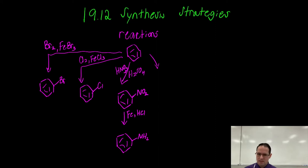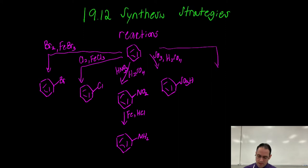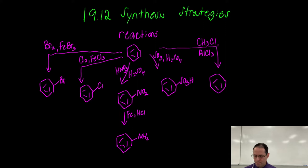Another reaction we can do is sulfonation. We do that with fuming sulfuric acid — SO3 and H2SO4. In this lecture I'm not going to focus on de-protecting, so I'm not going to show how that can be removed. Friedel-Crafts alkylation can be carried out with various alkyl groups; I'll just use chloromethane here and aluminum chloride catalyst, and that will give toluene.